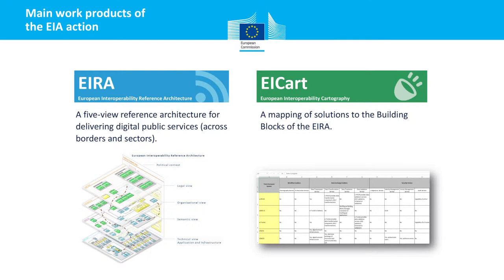In this slide I present the main work products of the EIA action. The two main work products are the EIRA, the European Interoperability Reference Architecture, which is a five-view reference architecture for delivering digital public services across borders and sectors, and the EIA cart, a mapping of solutions to the building blocks of the EIA. The EIRA focuses on the architectural space of designing a trans-European system, while the EIA cart focuses on the solution space.